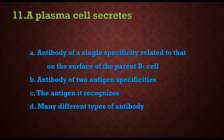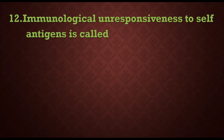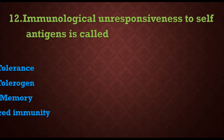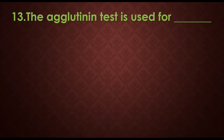Eleventh question: a plasma cell secretes — options are: a) antibody of a single specificity related to that on the surface of the parent B cell, b) antibody of two antigen specificities, c) the antigen it recognized, d) many different types of antibodies. The answer is a) antibody of a single specificity related to that on the surface of the parent B cell. Twelfth question: immunological unresponsiveness to self-antigen is called — the answer is a) tolerance.